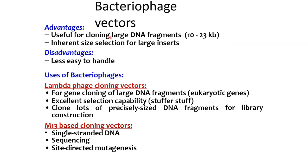Advantages of bacteriophage vectors include usefulness for cloning large DNA fragments up to 10 to 23 kb and inherent size selection for large inserts. Disadvantages include being less easy to handle. Uses include lambda phage cloning vectors for cloning large DNA fragments from eukaryotic genes with excellent selection capability using stuffer fragments, and for library construction. M13-based cloning vectors are used for single-stranded DNA sequencing and site-directed mutagenesis.